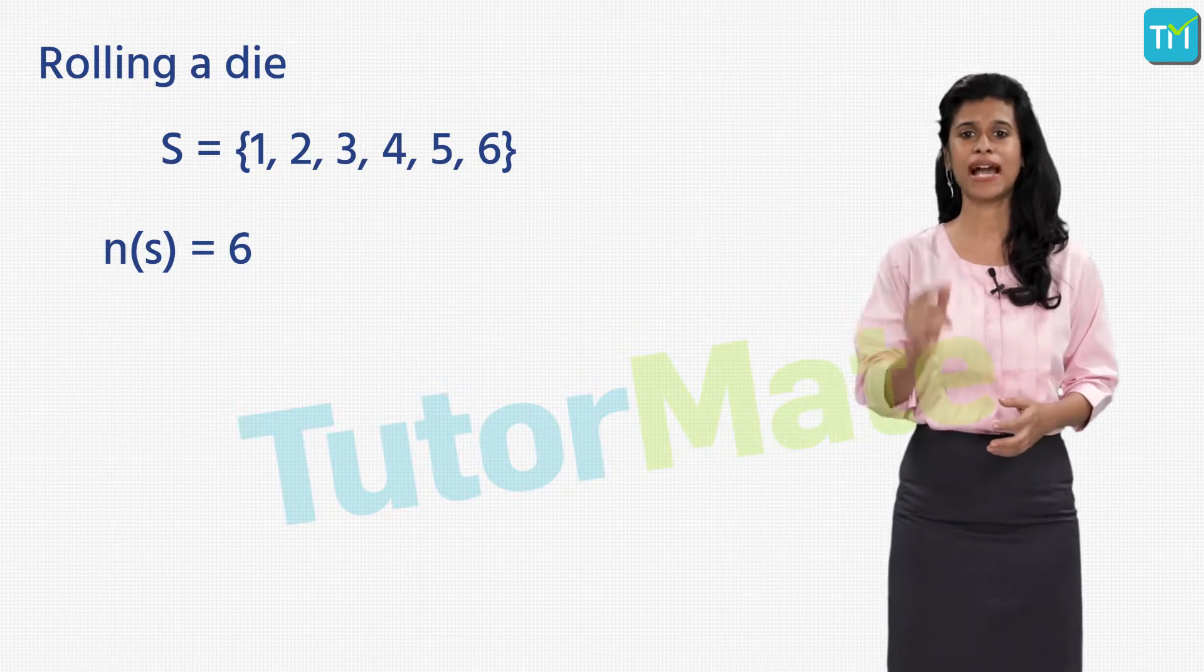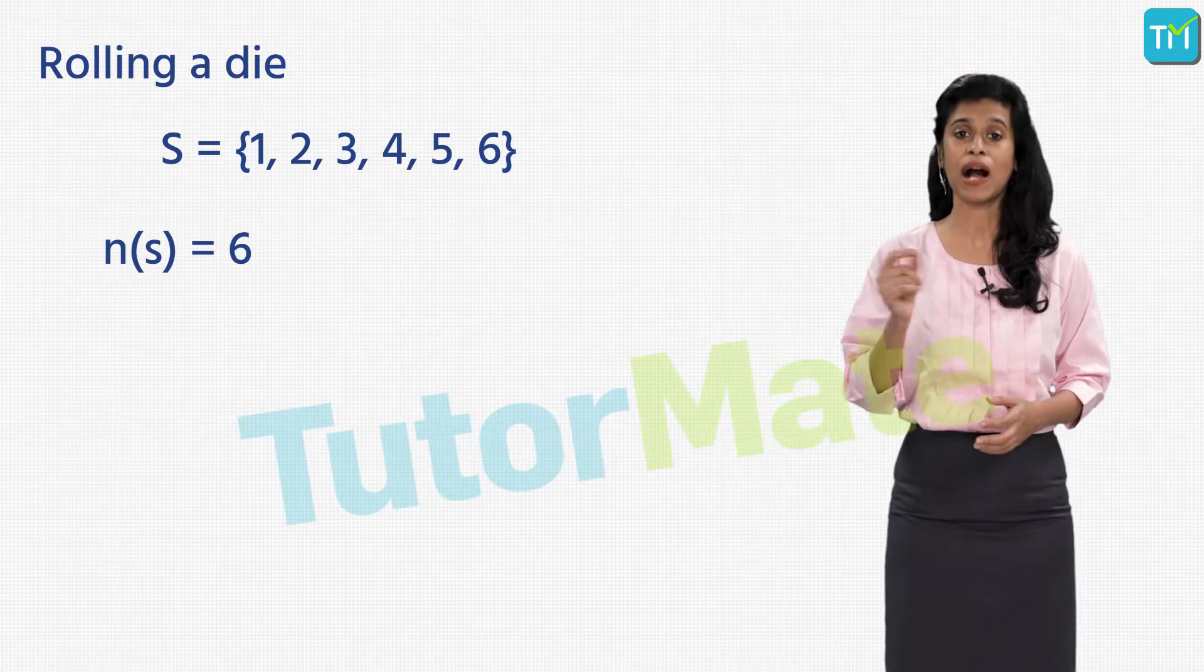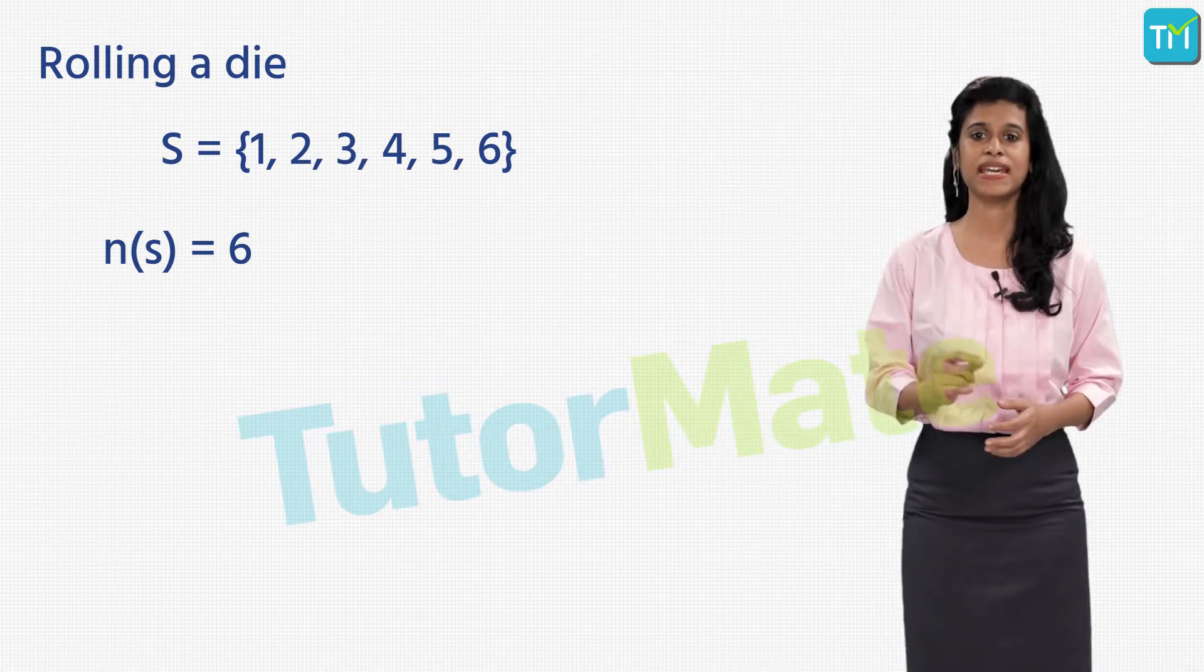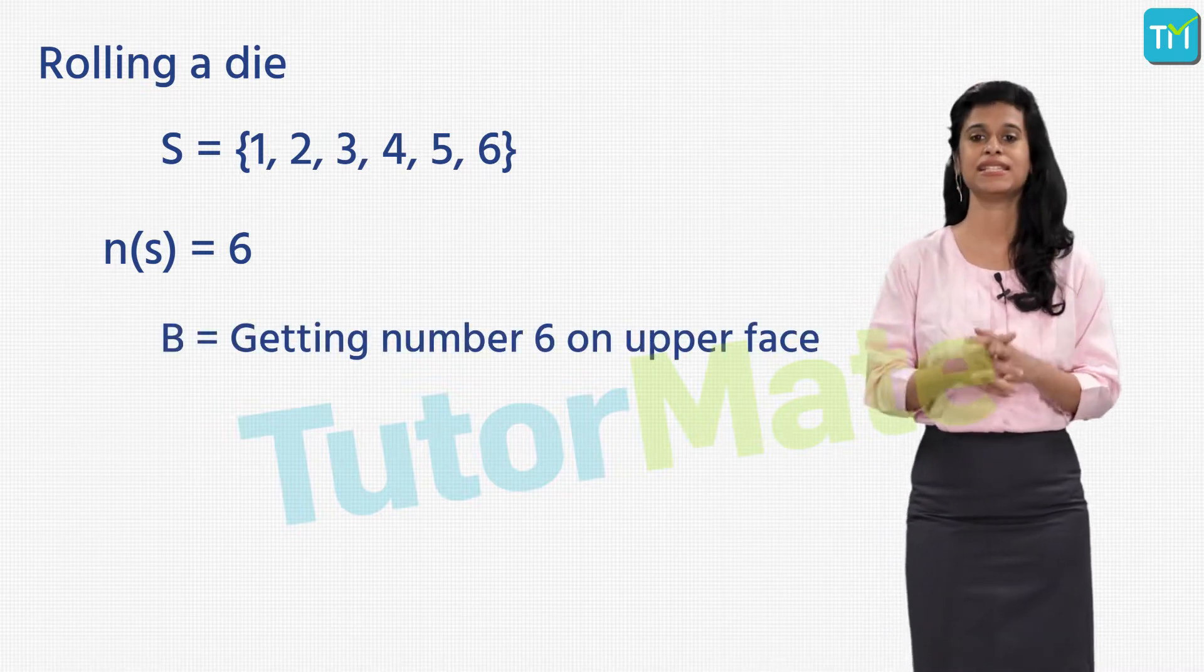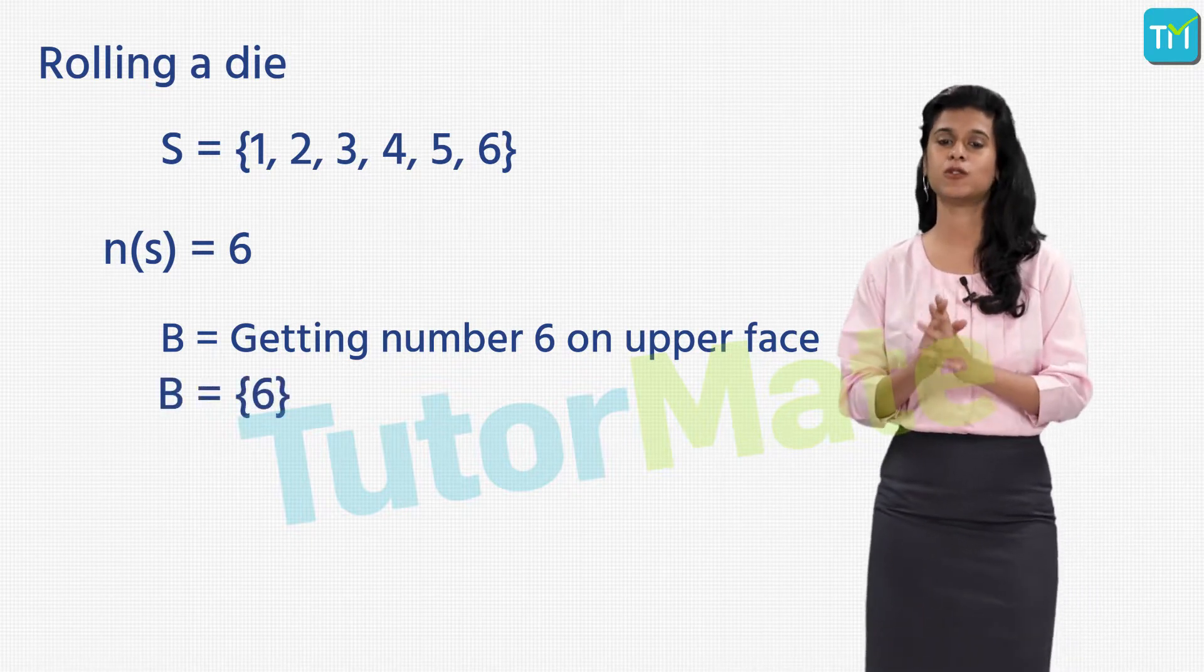So when you want the die to show the number six in order to get your piece out on the board, we say event B is getting the number six, and we write this as B = {6} where six is written in curly brackets, and n(B) in this case will be one.